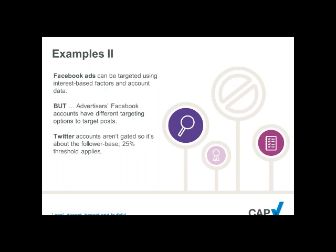Some examples from the online sphere. Facebook's advertising platform allows the use of interest-based factors and account data to effectively target groups who are more likely to be of age because of their interests, and to not target groups whose interests are likely to indicate they are younger than the protected age categories. You also have to remember that platforms like Facebook, as well as providing opportunities to advertise, also provide advertisers with actual account spaces under their control that they can use.